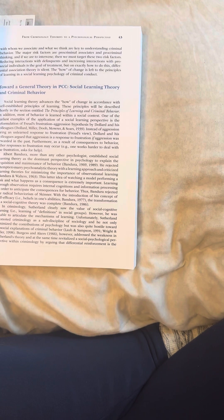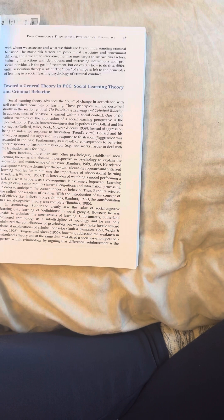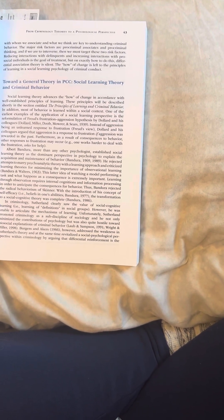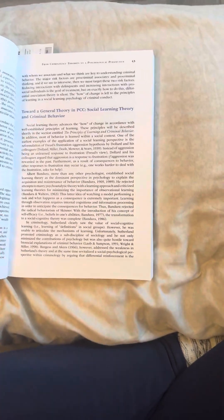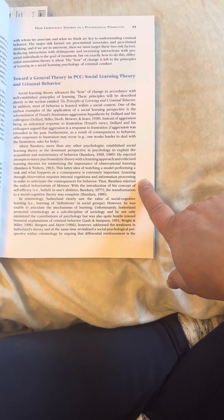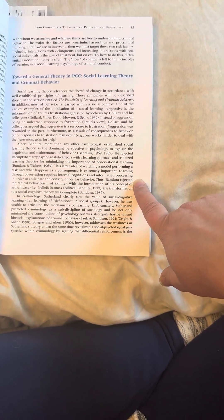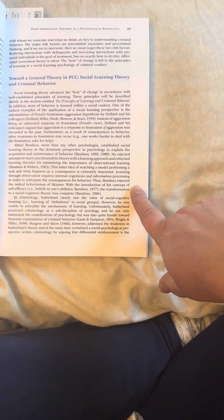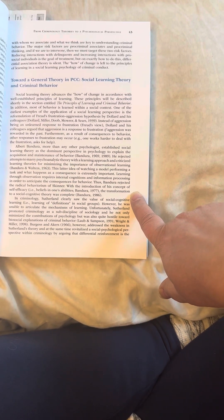Instead of aggression being an unlearned response to frustrations, Freud's view, Dollard and his colleagues argue that aggression is a response to frustration if aggression was rewarded in the past. Furthermore, as a result of consequences to behavior, other responses to frustration may occur. Example, one works harder to deal with the frustration, ask for help. Albert Bandura, more than any other psychologist, established social learning theory as the dominant perspective in psychology to explain the acquisition and maintenance of behavior. He rejected attempts to marry psychoanalytical theory with a learning approach and criticized learning theories for minimizing the importance of observational learning. This latter idea of watching a model performing a task and what happens as a consequence is extremely important.